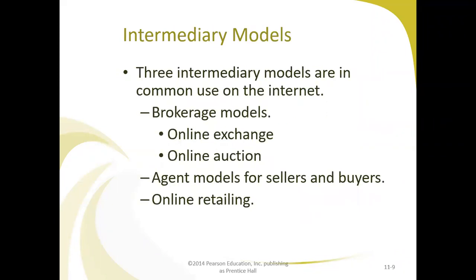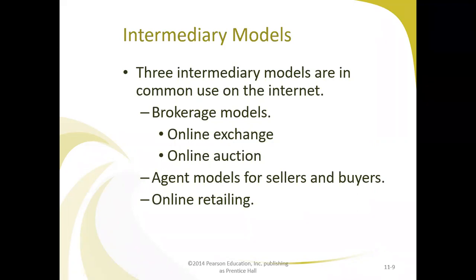Three intermediary models are commonly used on the internet: the brokerage model, the agent model, and online retailing. In the brokerage model, there are two sub-types: online exchange and online auction. A broker creates a market in which buyers and sellers negotiate and complete transactions. Brokers typically charge the seller or buyer a transaction fee for facilitating the transaction, but they do not represent either party. Some brokers also charge listing fees — if your product is listed on their website, you must register and pay.